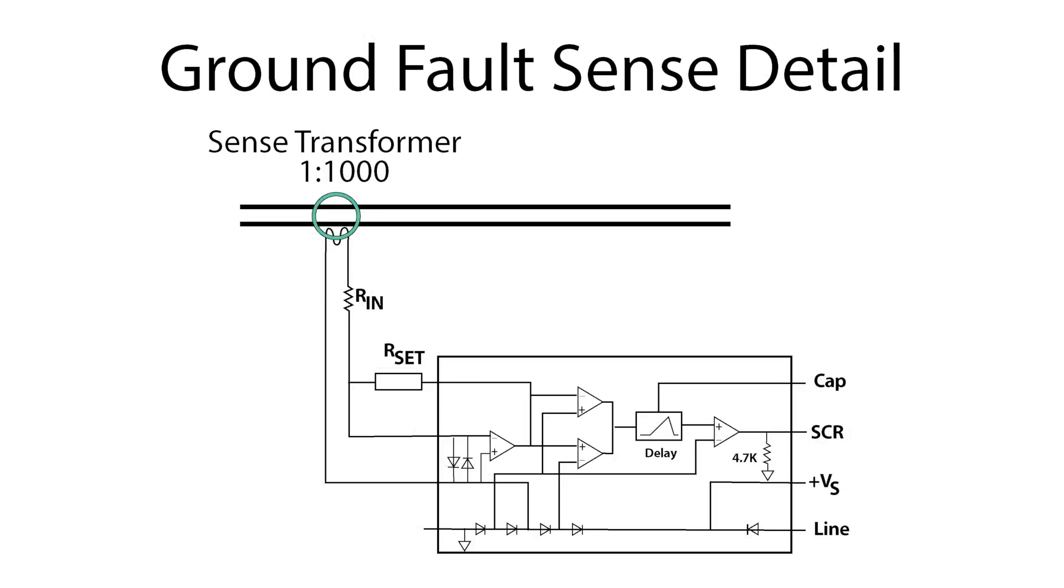The operative principle is that the current through the hot and neutral lines should be identical. If they are, there is no net magnetic field generated and there should be no current induced in the toroid windings.